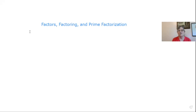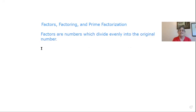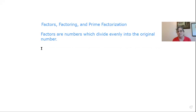So first of all, let's talk about some definitions. The definition of factors are things that are multiplied together. The factors of any number are numbers that will go into it evenly, because that means you can multiply that factor times another factor and get the number. So if a number will go into another number, therefore it is a factor of that number.